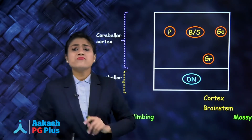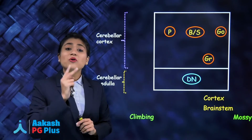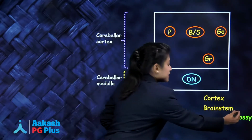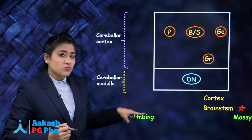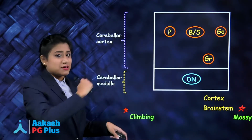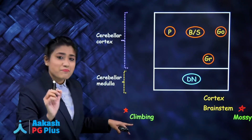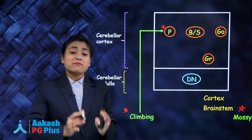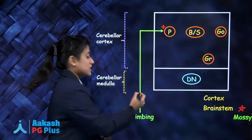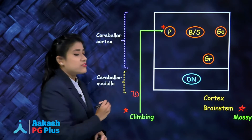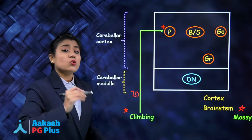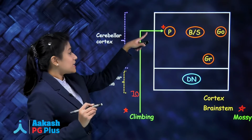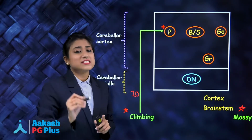Information reaches the cerebellum via two types of afferent fibers. The first is climbing fibers and the second is mossy fibers. Climbing fibers come directly from the inferior olivary nucleus and travel upward to the cerebellar cortex, where they stimulate Purkinje cells. Write it down: climbing fibers come only from the inferior olivary nucleus and stimulate Purkinje cells.